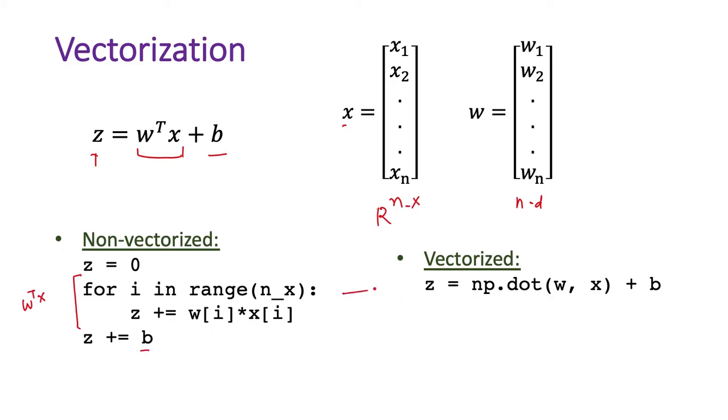This can be done in a vectorized fashion using NumPy's built-in dot function, which takes two vectors as input and calculates their dot product. You can add b in the same operation.